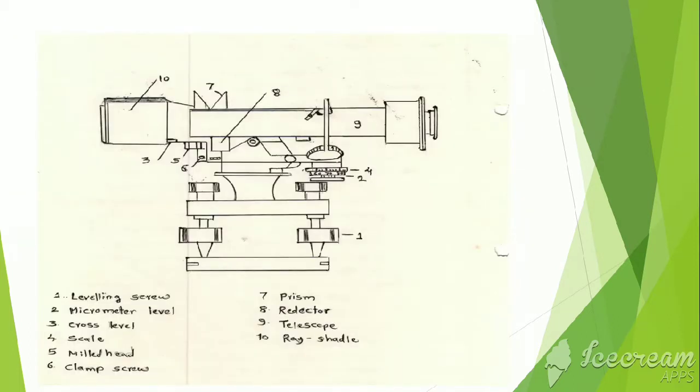The various components are as follows: leveling screw, micrometer level, cross level, scale, milled head, clamp screw, resin, reflector, telescope and ray shadow.